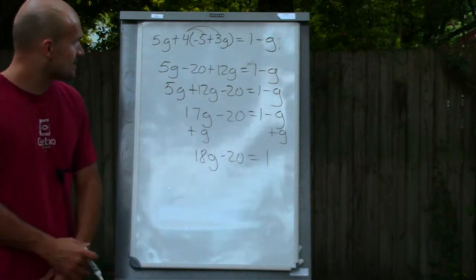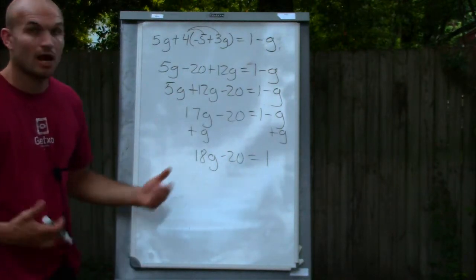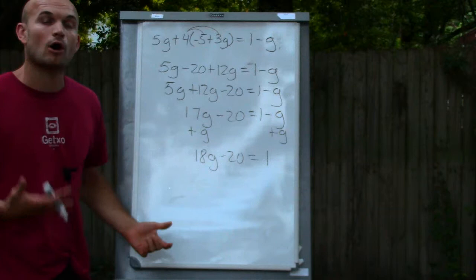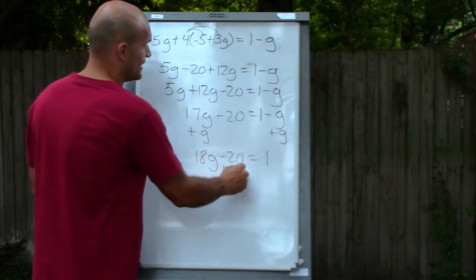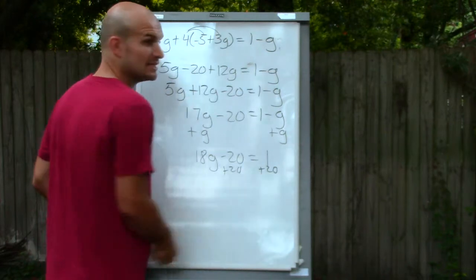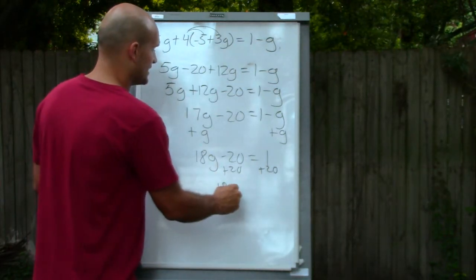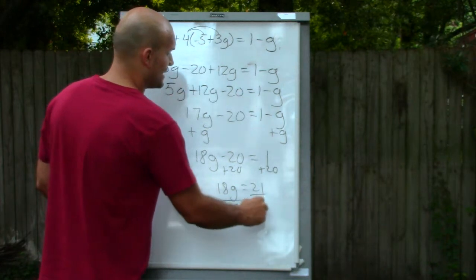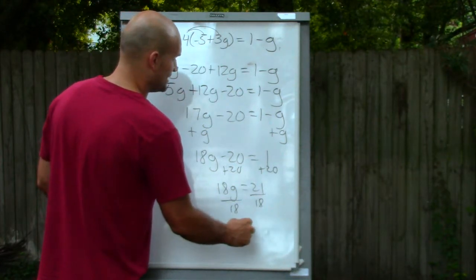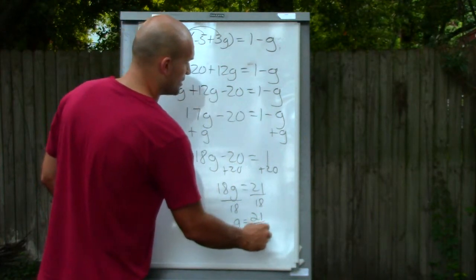So now the next thing I need to look at is, now I'm at a two-step equation. So now all I need to do is simply solve for my variable. So I'll add the 20 to both sides using addition property of equality. So I get 18g equals 21, divide by 18, and I get g equals 21 over 18.